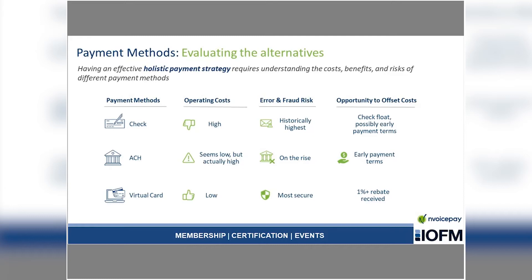The third option, virtual card, has very low operating costs. You can find any number of vendors who will make these payments for you and even provide automation upstream around approvals and other parts of your system. The error and fraud risk is very low — the control around a virtual card payment is strong. You can change the amount and don't have to reprocess credits or other payment scenarios, so it's very secure and in your control. You should also expect to receive some sort of rebate when you pay by card, similar to reward points on your airline miles card, rewarding you for the network's service on control and security.